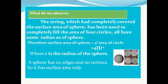From this activity we observed that the string which completely covered the surface area of the sphere was used to completely fill the area of four circles. Therefore, we can conclude that the surface area of the sphere is four times the area of a circle, which is four times pi r squared. So the surface area of a sphere is four pi r squared, where r is the radius of the sphere. As a sphere has no edges and no vertices, there is no curved surface area or total surface area — you will have only surface area.